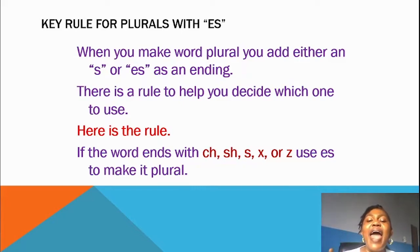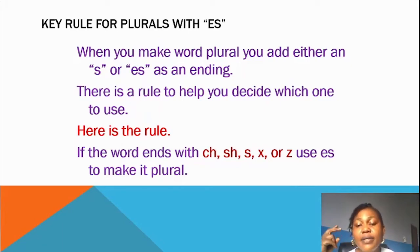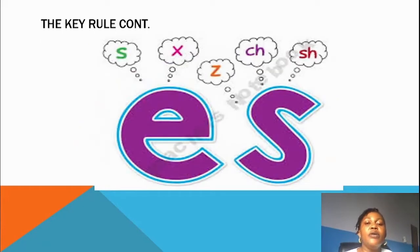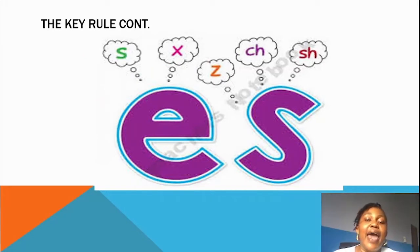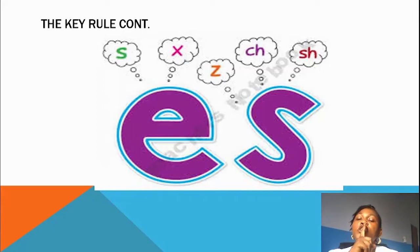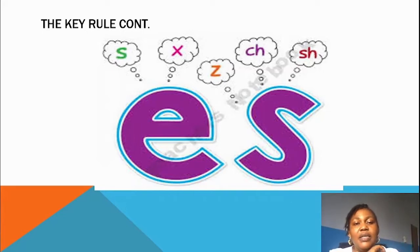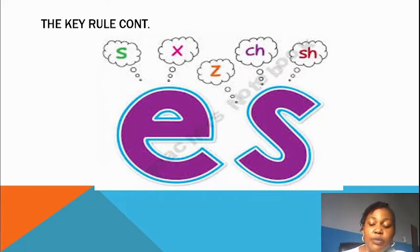Let me go over it again. If the word ends with CH, SH, S, X, or Z, use ES to make it plural. Now look at this — these are ES plural forms. Whenever a word ends with either of these, and you want to write the plural, add your ES. Don't just write S, but add ES.